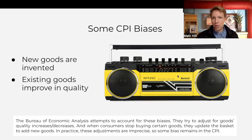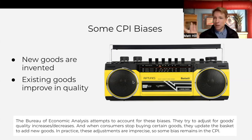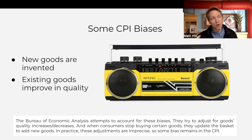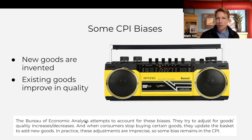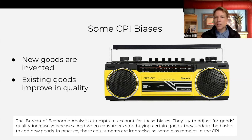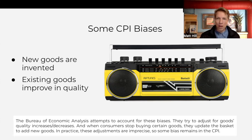For example, you have a portable stereo — today, these little Alexa-type things or speakers are of much better quality, or at least have much more capabilities in terms of Bluetooth and that sort of thing. Now, the BEA, the people in charge of the CPI, do try to account for these biases in a couple of different ways. But obviously these adjustments can never be perfect because these are either fundamentally new goods that come out or real changes in quality and capabilities of our existing goods.